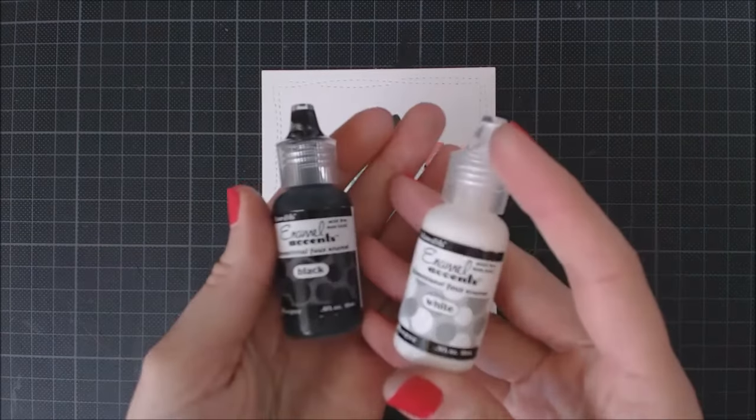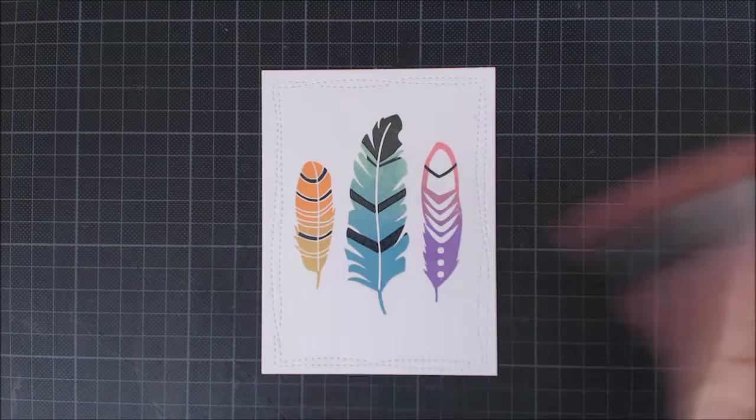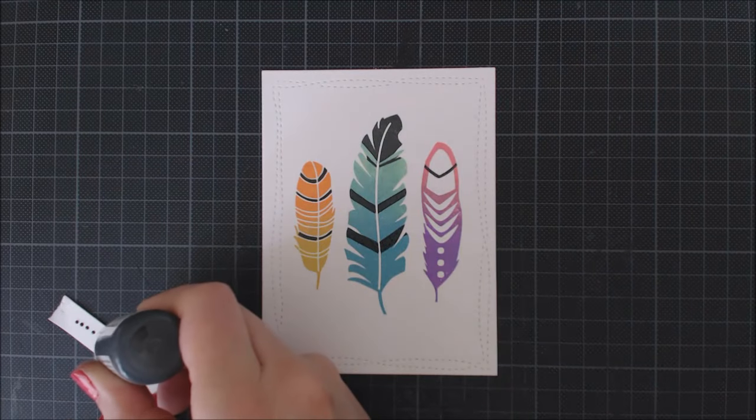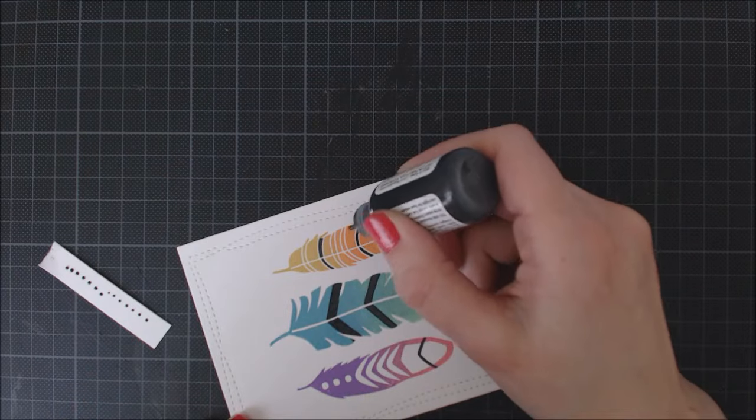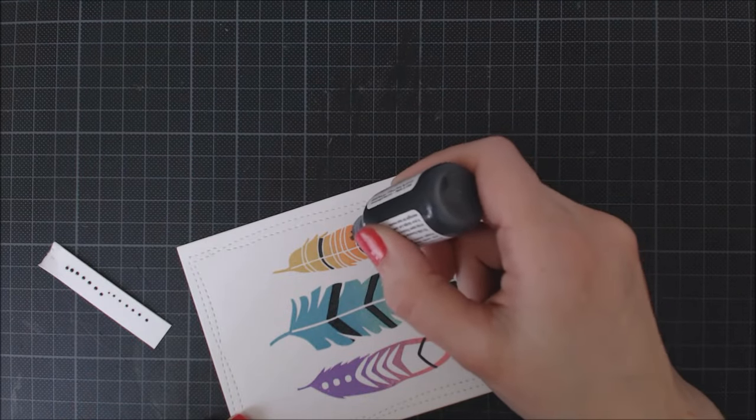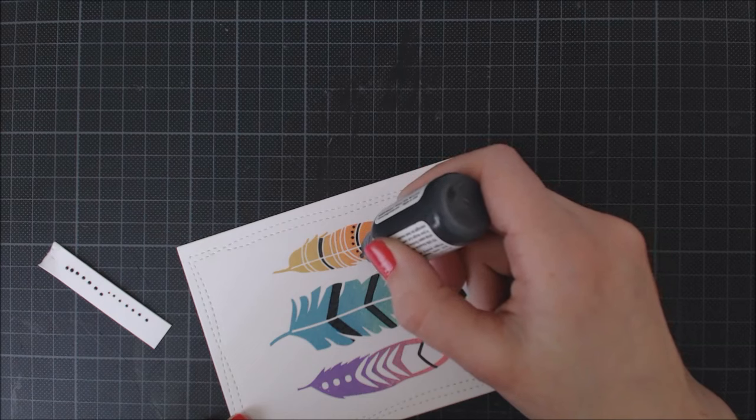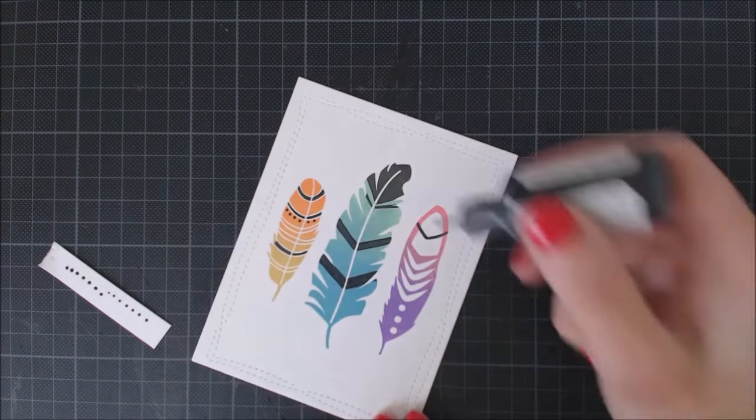To keep adding details to my stamps, I'm going to be using these liquid enamel bottles in black and white, and because this is permanent, I'm always shaking my bottles and trying my hand on scrap paper first before I start applying them to my project.